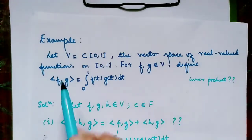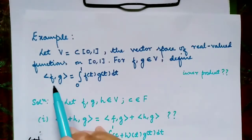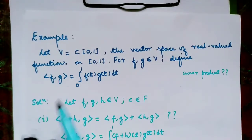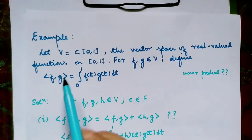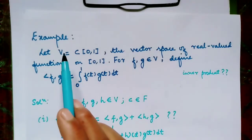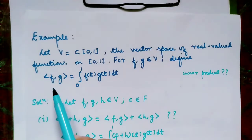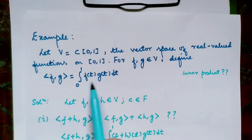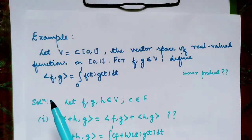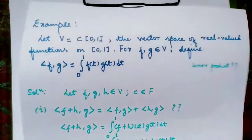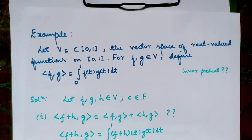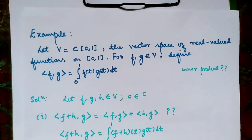So this defines an inner product, and hence this vector space equipped with this inner product is an inner product space. That's all, thank you.